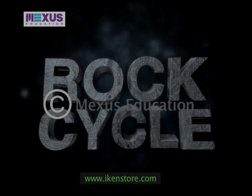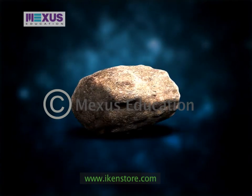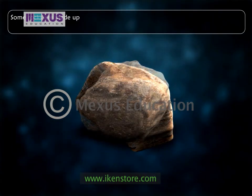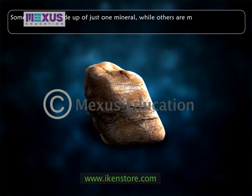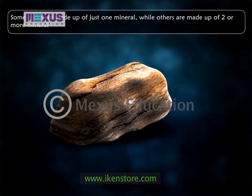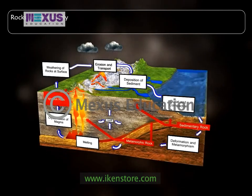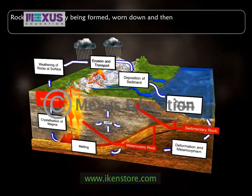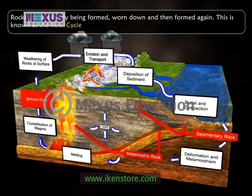Rock Cycle. Rocks are the most common material on earth. Some rocks are made up of just one mineral, while others are made up of two or more minerals. Rocks are constantly being formed, worn down and then formed again. This is known as the rock cycle.